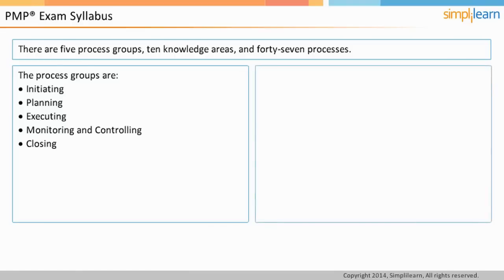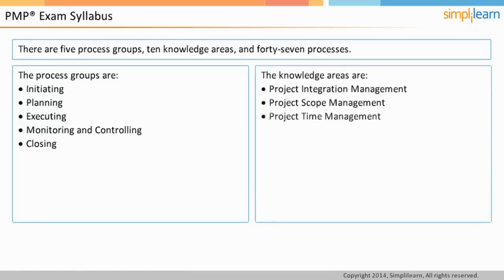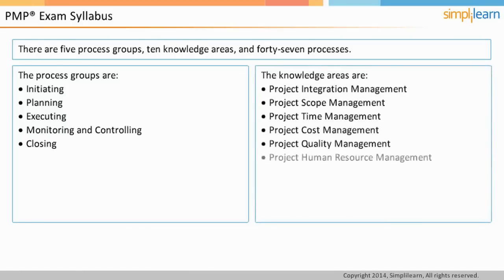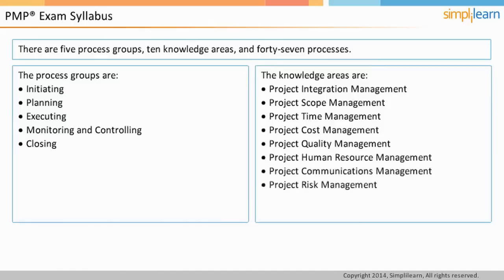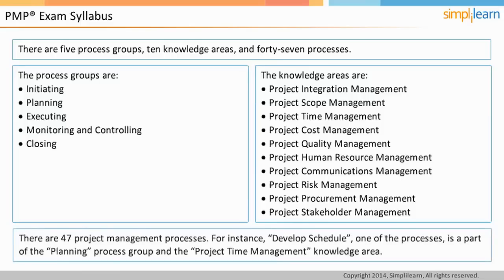Let us see what a knowledge area is. As per the PMBOK guide, there are ten knowledge areas. A knowledge area is a set of specific processes performed to meet a project objective. There are 47 processes, which might be accomplished in the project planning process group and others in the project monitoring and controlling process group.